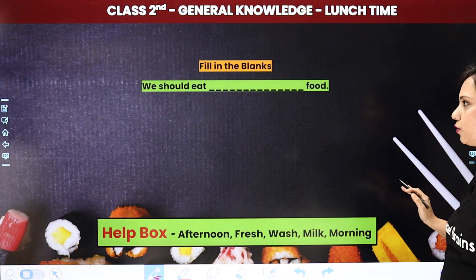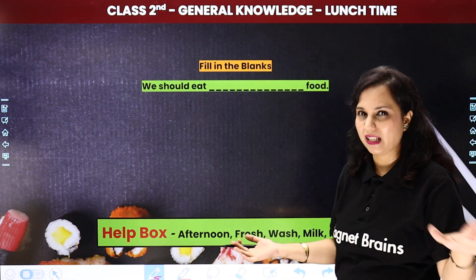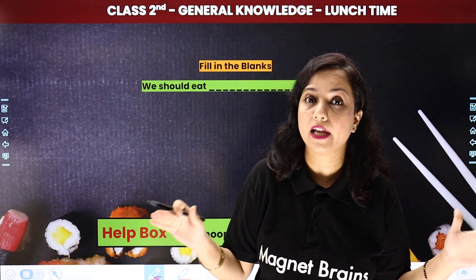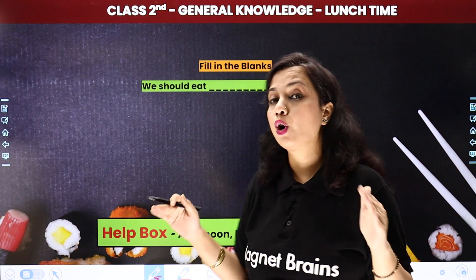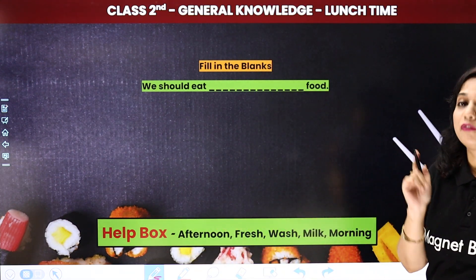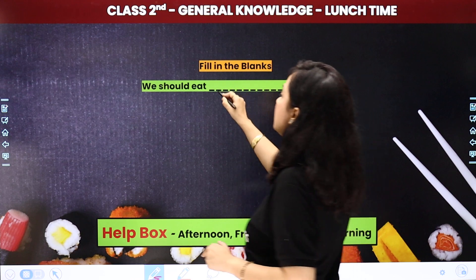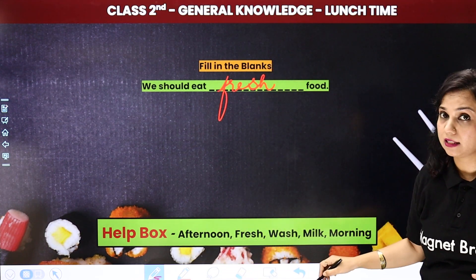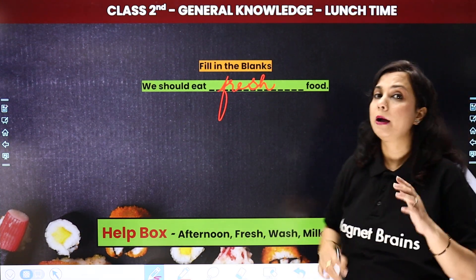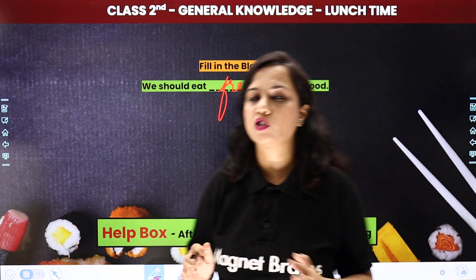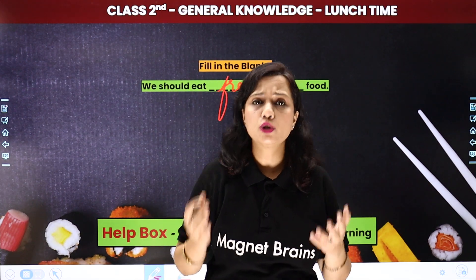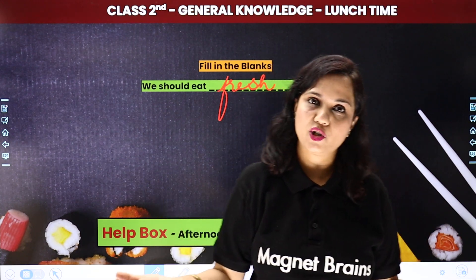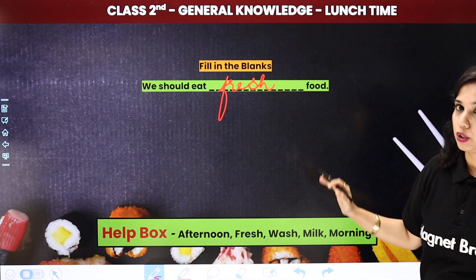We should eat fresh food. Hamein kaisa khana khana chahiye? Basa, purana, ya bilkul ganda waala khana jo bilkul sad chuka hai — you should not eat that type of food. You should eat fresh food. So, we should eat, children, fresh food. Aap help box se bhi help le sakte hain — vahan pe option diya hua hai 'fresh'. Maane ke har cheez taza honi chahiye. Basa khane mein usually kya hota hai ki cheezein kharab ho jati hain aur wo aapke pet mein jaati hain aur takleef pahunchaati hain. So, we should eat fresh food.